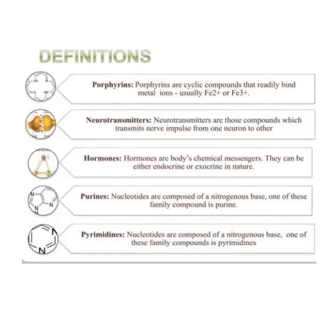Let's look at the definitions so that you can understand. What are porphyrins? Basically, they are rings. Rings are called cyclic structures. If it is a cyclic structure, it is called a cyclic compound.